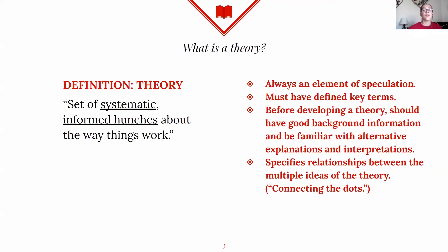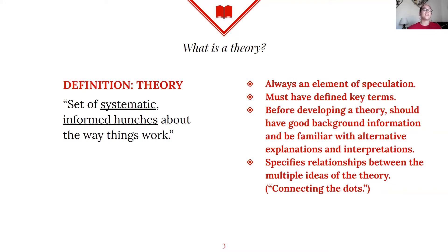So what is theory? It's a set of systematic, informed hunches about the way things work. Theory helps us connect the dots about what we're seeing in daily life and in these situations. If you have enough dots together, people create theories to say, this is what I think is going on — this is the relationship I see. There's always an element of speculation because, unlike the hard sciences, people are always changing. You could put the same person in the same situation twice and they might respond differently. With theory, you also have to have defined key terms, so we all agree on the meaning of the words — because if you and I have different definitions of a word like 'symbol,' we probably won't reach consensus on that aspect of the theory.